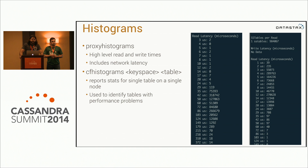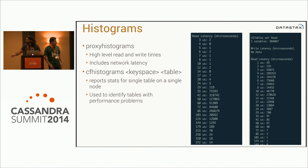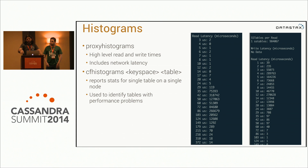If you want to take a look at what a single node in Cassandra is actually doing, within NodeTool there are two types of histograms that are extremely useful. The first is called proxy histograms, which provides high-level read and write times at the node level including network latency. The other tool is called CF histograms — the naming is a little confusing since it dates back to when tables were called column families. What it does is report stats for a single table on a single node, which is really useful if you want to narrow down your query performance problems to a specific table.